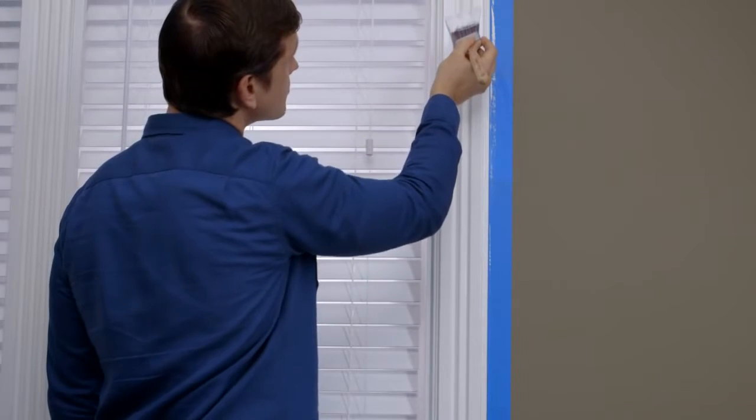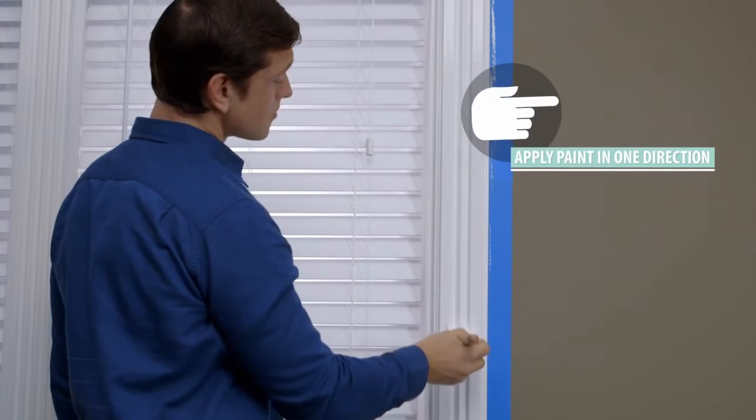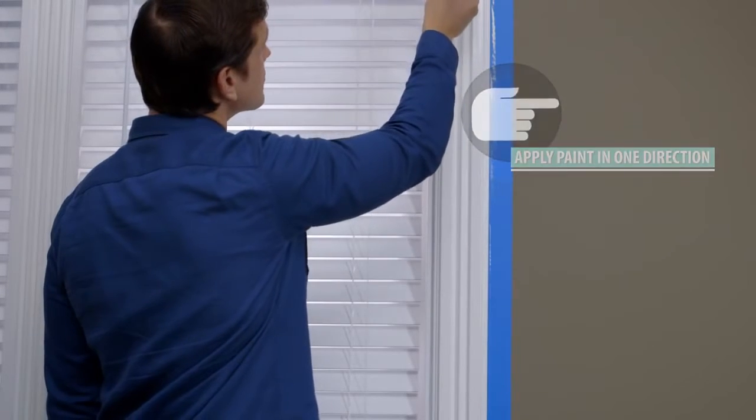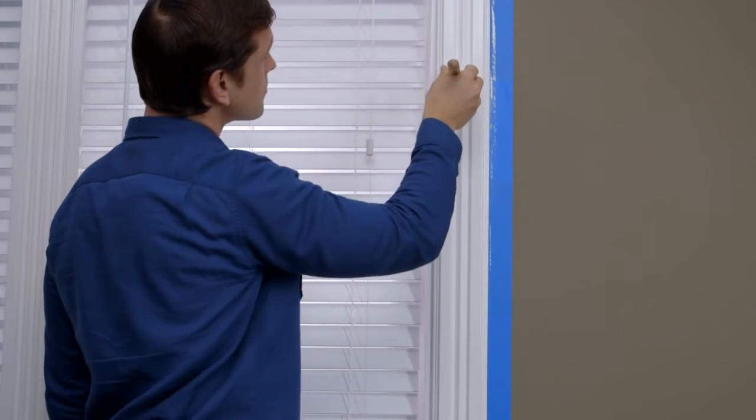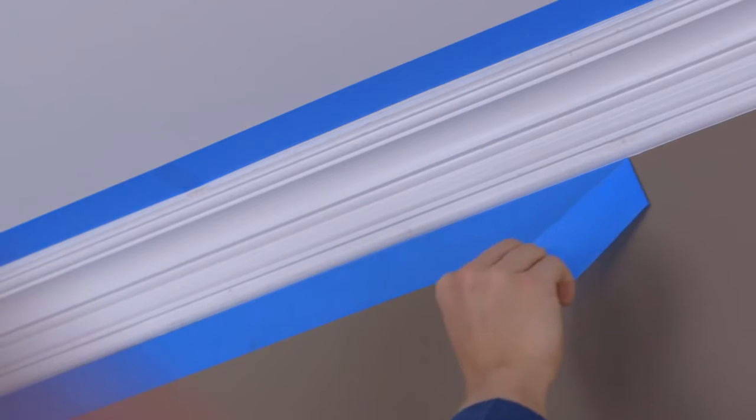A two-inch angled sash brush is generally best for painting trim. Apply the paint in one smooth stroke in one direction. Start subsequent strokes of the brush in a dry area, working towards the wet painted area. Use a glossy finished paint on your trim to make sure it really stands out from your walls. Once your paint is dry to the touch, remove the tape by slowly peeling it back over itself.